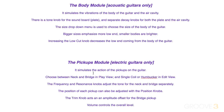When working with electric guitars, this simulates the action of the pickups on the guitar. We can choose between neck and bridge either in play view or in this edit view, and we can also choose between single coil or humbucker. We have separate frequency and resonance knobs for each of the pickups, we can control their position, the offset between the two of them, and then the overall level. See you for more in the next video.